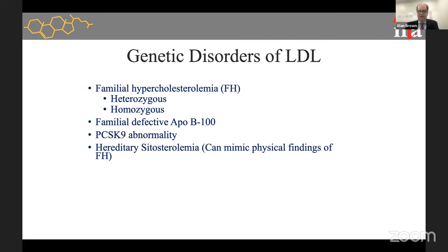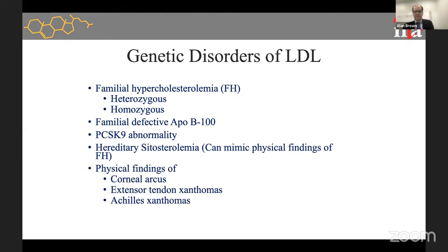Hereditary beta-sitosterolemia is completely different, but the physical findings can look similar to FH, so it is occasionally mistaken for familial hypercholesterolemia on physical exam. Commonly seen findings include corneal arcus at a young age — if you see a white ring around the cornea in someone under 45, you should think FH. Xanthomas on the extensor surface of the hands or on the Achilles tendons are not on everybody with FH, but if they're there, they're pathognomonic.